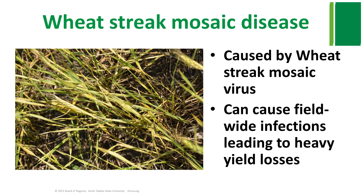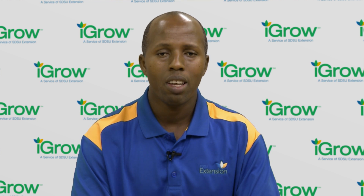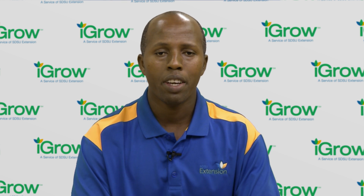Wheat streak mosaic disease, caused by wheat streak mosaic virus, is an economically important disease of wheat in the Great Plains. This virus is especially problematic in this region, mainly due to the availability of native grasses, which serve as good hosts for the virus as well as for the vector, the wheat curl mite.